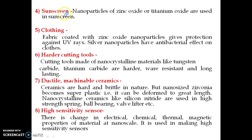The next application is sunscreen. Zinc oxide or titanium oxide nanoparticles absorb UV rays, so using them in sunscreen gives protection against ultraviolet radiation. The same principle applies to clothing — fabric coated with zinc oxide nanoparticles absorbs UV rays, protecting the wearer. If silver nanoparticles are added to the fabric, it also has an antibacterial effect, protecting against bacterial infection.